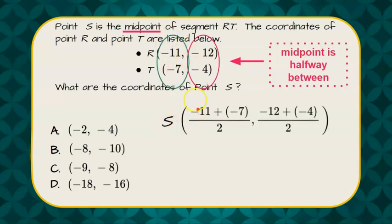So here we go. Point S is the X coordinate: negative 11 and negative 7 divided by 2. The Y coordinate: add the Y's and divide by 2.